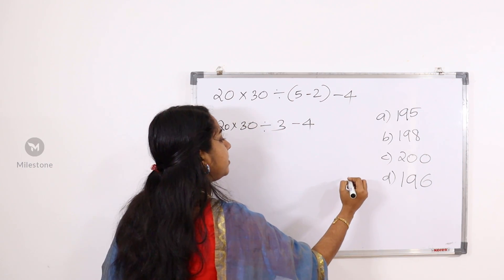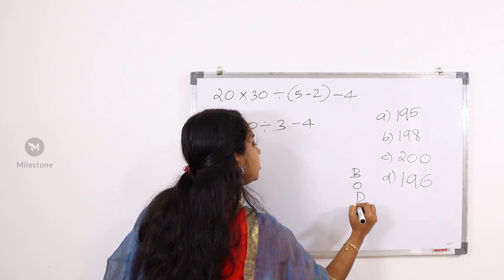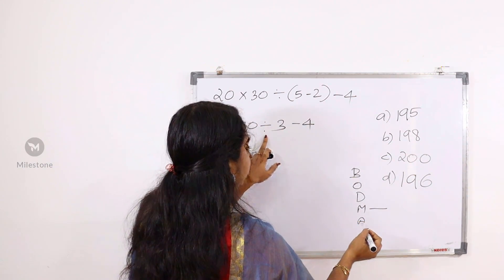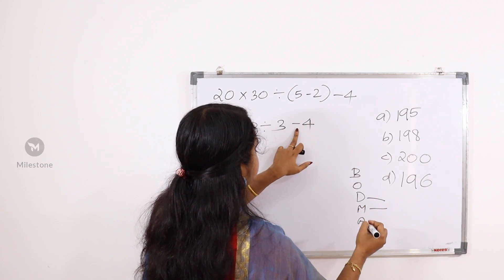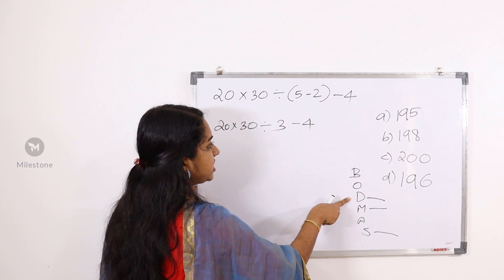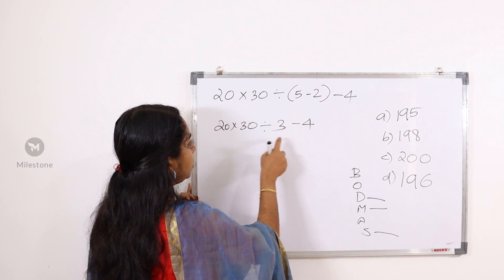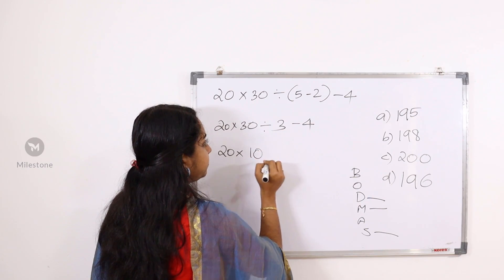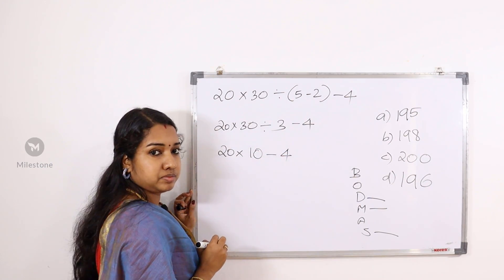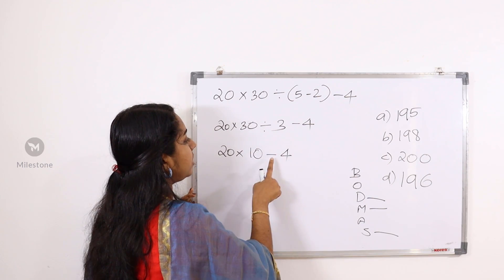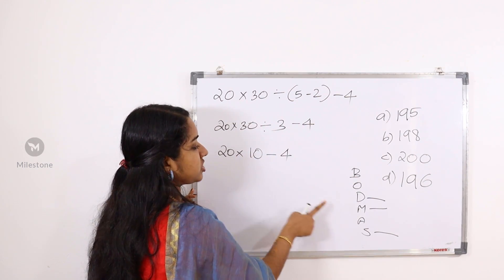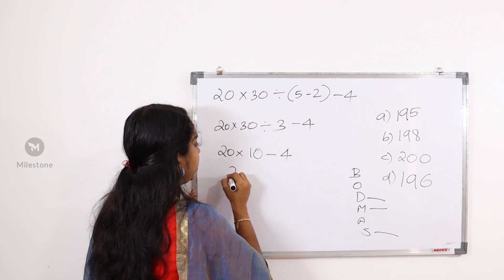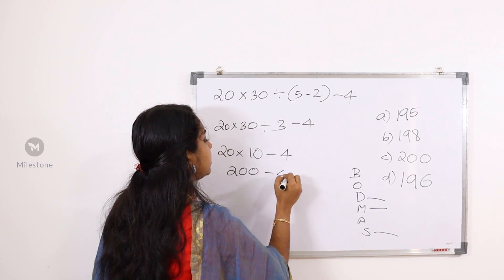What does it do on the board? It is a multiplication, then subtraction, then division. It is 32 minus 30. Then 10 minus 4. It is a multiplication, then subtraction. On the board: 20 minus 30 is minus 4. It is 20 minus 40.